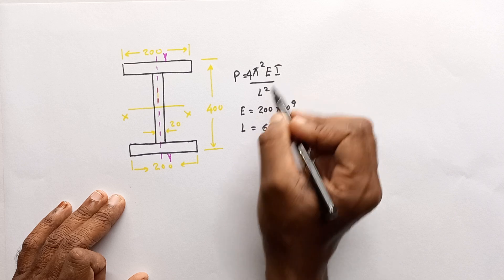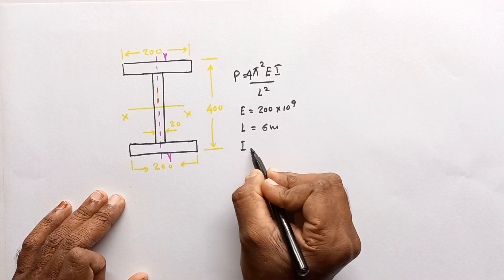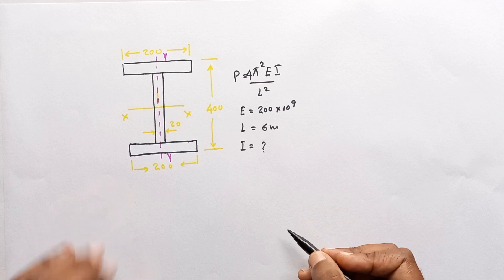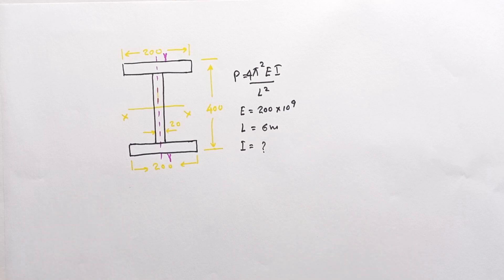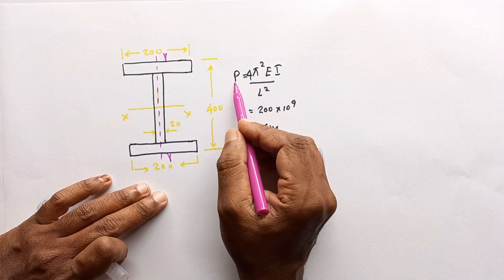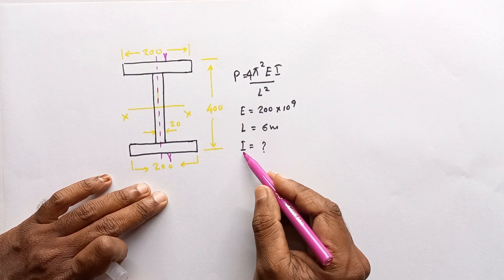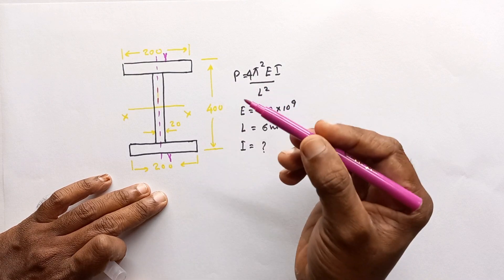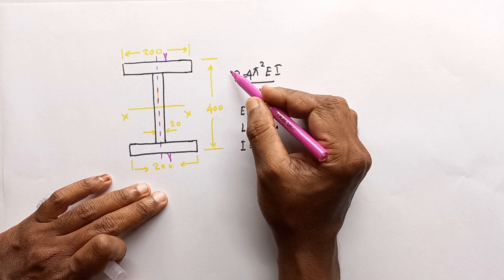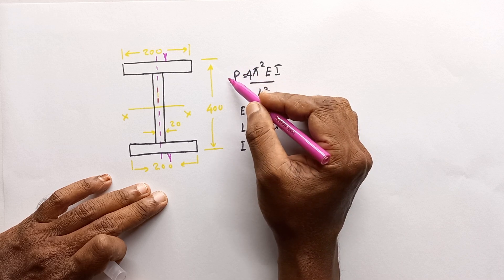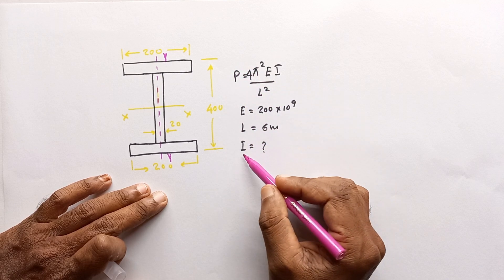We have to find the I value to substitute in this equation. We need the I value which gives the minimum buckling load — that means we have to find the minimum I value. When increasing the load it will reach the minimum value first, so the column will buckle around the minimum I value axis.